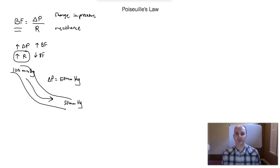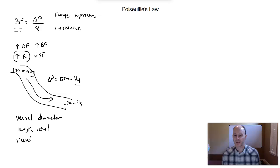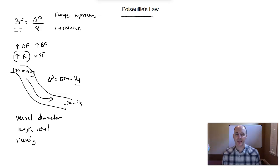Resistance can come in various forms. The resistance could be the vessel diameter — the size of the vessel. We can also look at the length of the vessel, which can also affect resistance. And then we can look at something called viscosity, which represents the thickness of the fluid. Higher viscosity fluids will have more resistance; lower viscosity fluids will have less resistance. So if we look at vessel diameter, vessel length, and viscosity, we can better understand what resistance is — and that's exactly what Poiseuille did in the 1800s.